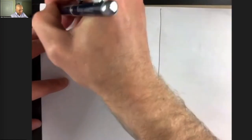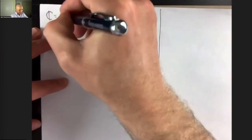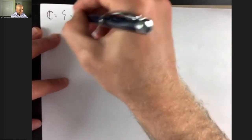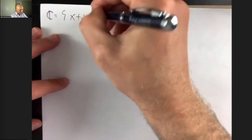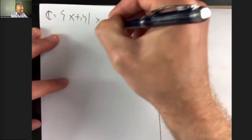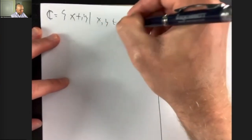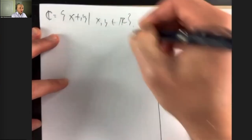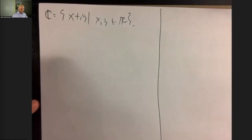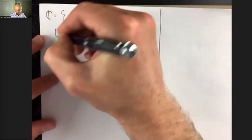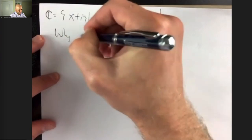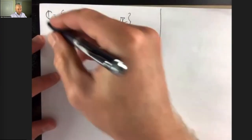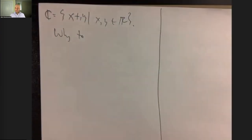Complex analysis, complex numbers. Complex numbers are x plus i·y, where x and y are real. So that's complex numbers analysis — analysis is a fancy way of saying calculus. Why study calculus over the complex numbers?